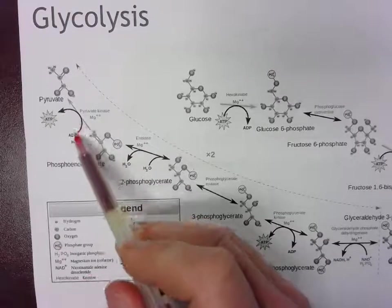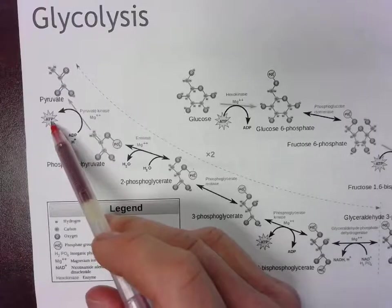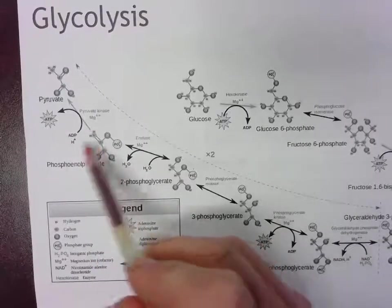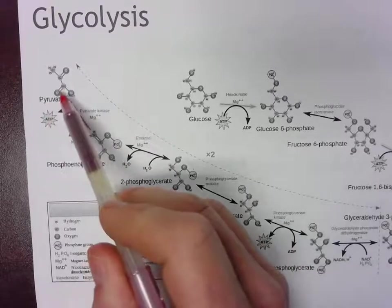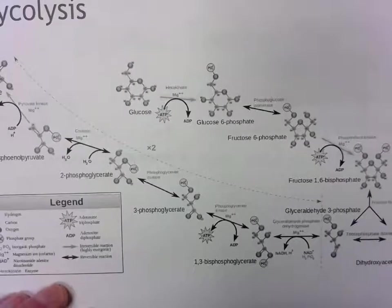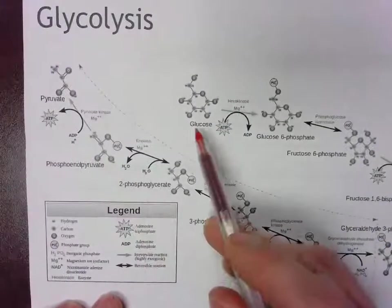In the final step, this will be step 10, ATP gets produced again. So ADP and phosphoenolpyruvate are reactants. ATP and pyruvate are the products. So in step 10, this is the last step, two ATP are produced, because remember, we have two phosphoenolpyruvates for every one glucose.